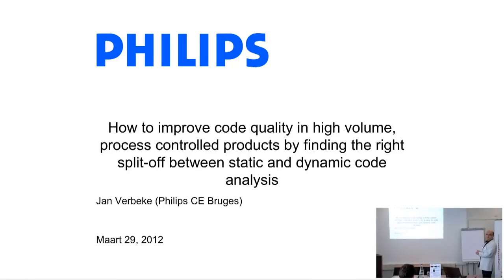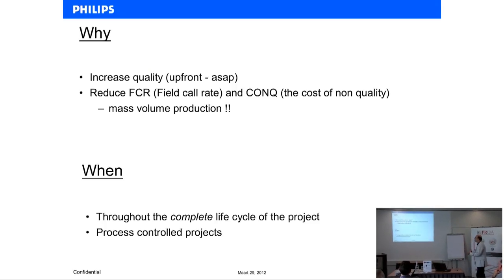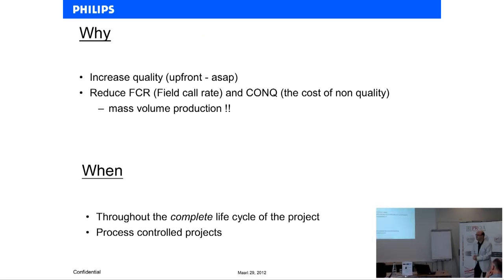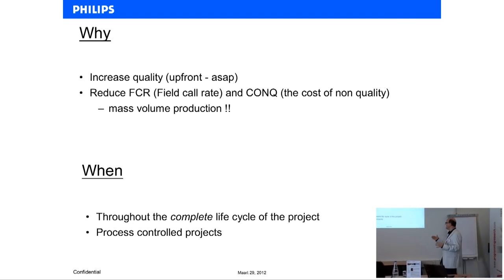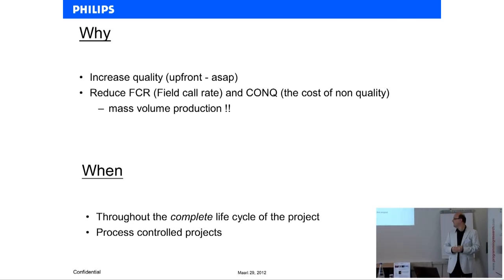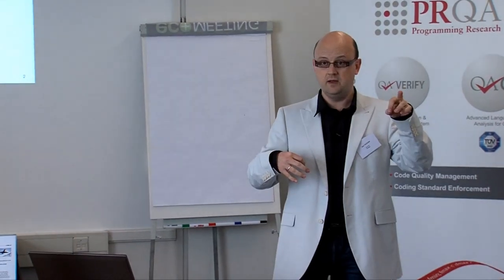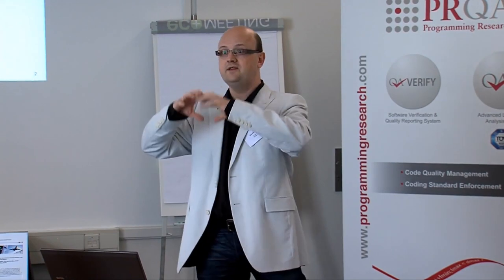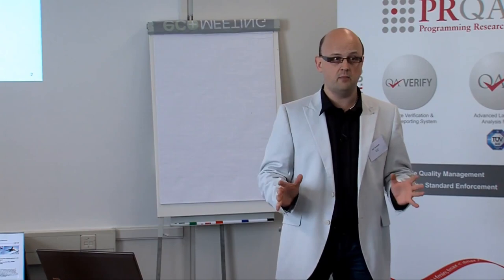How to improve code quality in high-volume process control products by finding the right split-off between static and dynamic code analysis. We have to increase quality. We have to reduce our field call rate and our cost of non-quality because we have mass volume production. We do this throughout the complete lifecycle of the project, and all our projects are process controlled. You have to make sure that the quality aspect is within your process — if it's not in, you have a problem.